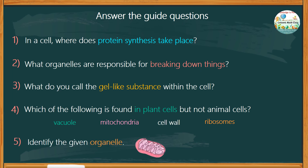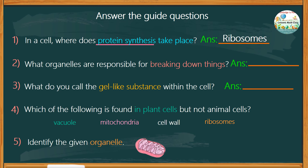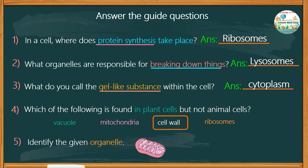You can always pause this video if you need more time to think. Let's go ahead and check your answers. Number one: protein synthesis takes place in the ribosomes. Number two: the organelles responsible for breaking down things are the lysosomes. Number three: the gel-like substance within the cell is called the cytoplasm. Number four: the cell wall can be found only in plant cells but not in animal cells. And the organelle in number five is the mitochondrion, or mitochondria. So how well did you answer all the questions? I am certain you did great!